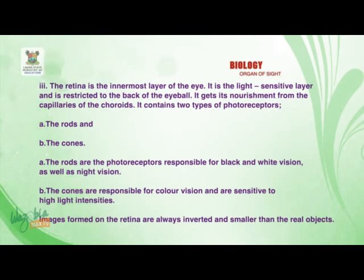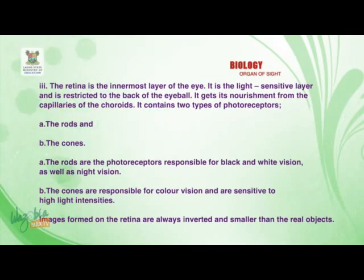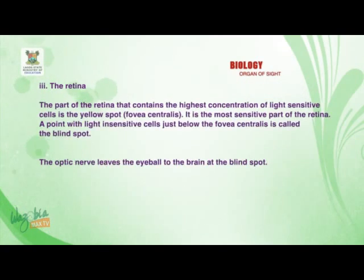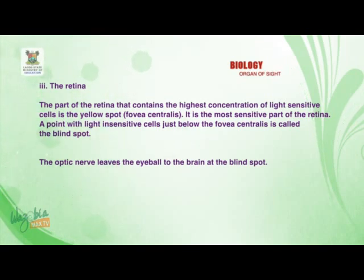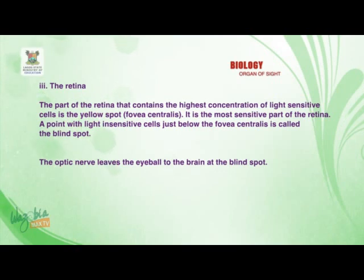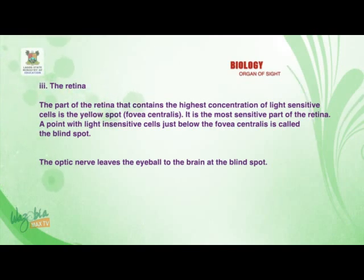The cones are responsible for color vision and are sensitive to high light intensities. Images formed on the retina are always inverted and smaller than the real objects. The part of the retina that contains the highest concentration of light-sensitive cells is the yellow spot, known as the fovea centralis. It is the most sensitive part of the retina.